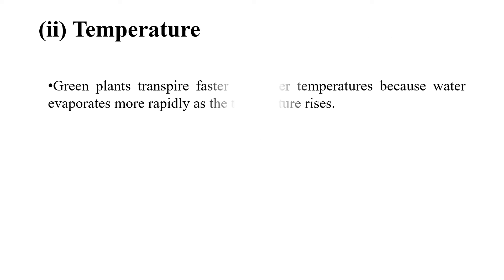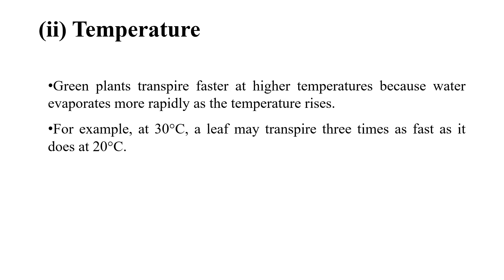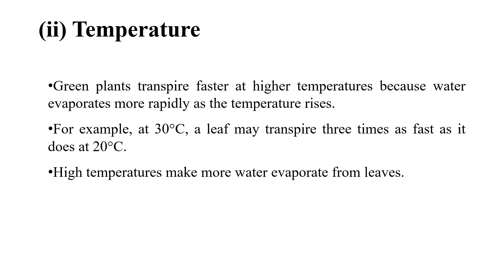2. Temperature: Green plants transpire faster at higher temperatures because water evaporates more rapidly as the temperature rises. For example, at 30 degrees Celsius, a leaf may transpire three times as fast as it does at 20 degrees Celsius. High temperatures make more water evaporate from leaves.